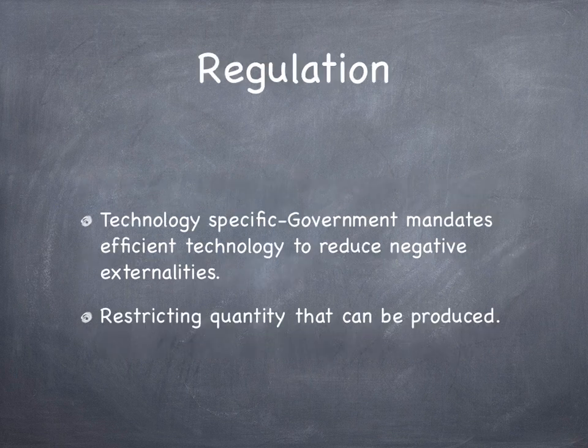Now regulation. There are two types. First, technology-specific regulation is when the government mandates efficient technology to reduce externalities. The problem with this approach is that there are usually many methods of being efficient, and the government may not have enough information to choose the least costly method. The second part of regulation is simply restricting the quantity that can be produced. The benefit is it creates incentives to reduce the externality, while the problem is monitoring costs are high.